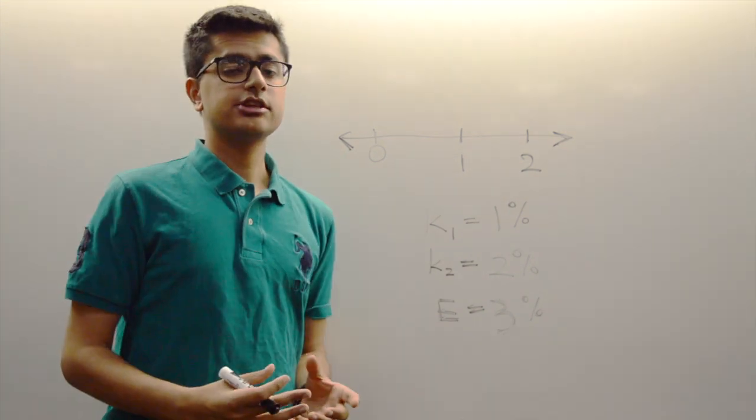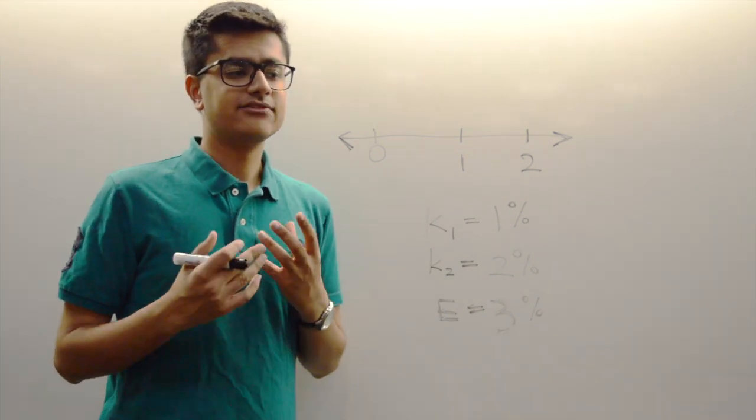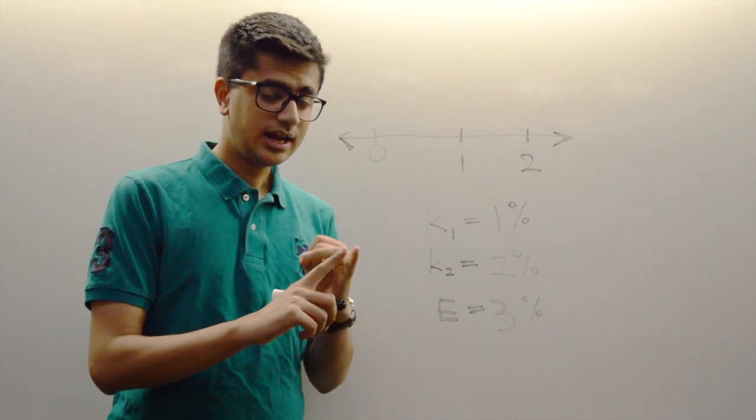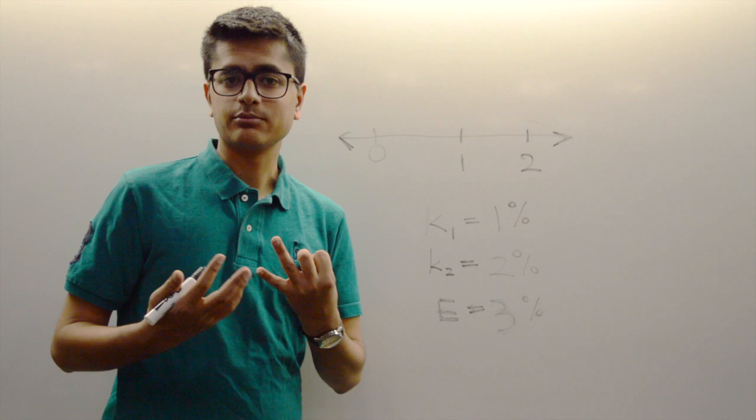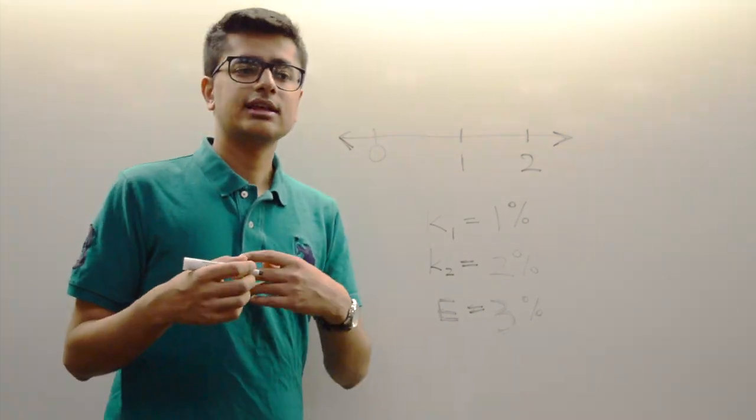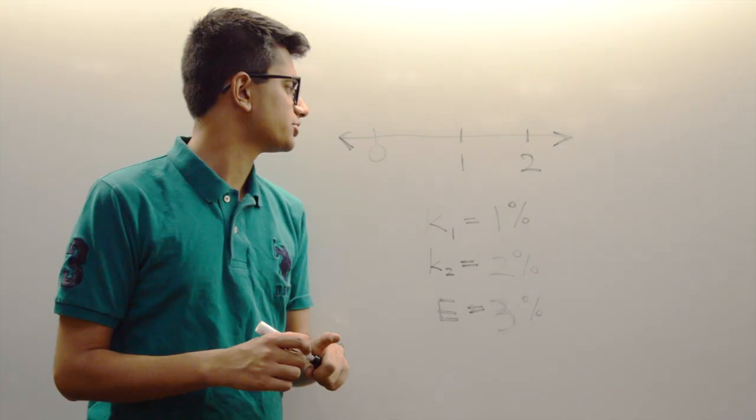Expectations theory basically states that investors are indifferent between two different strategies, rollover and lock-in, if they yield the exact same result. So what does that mean? Before I get started, we'll think of what exactly is the lock-in strategy.